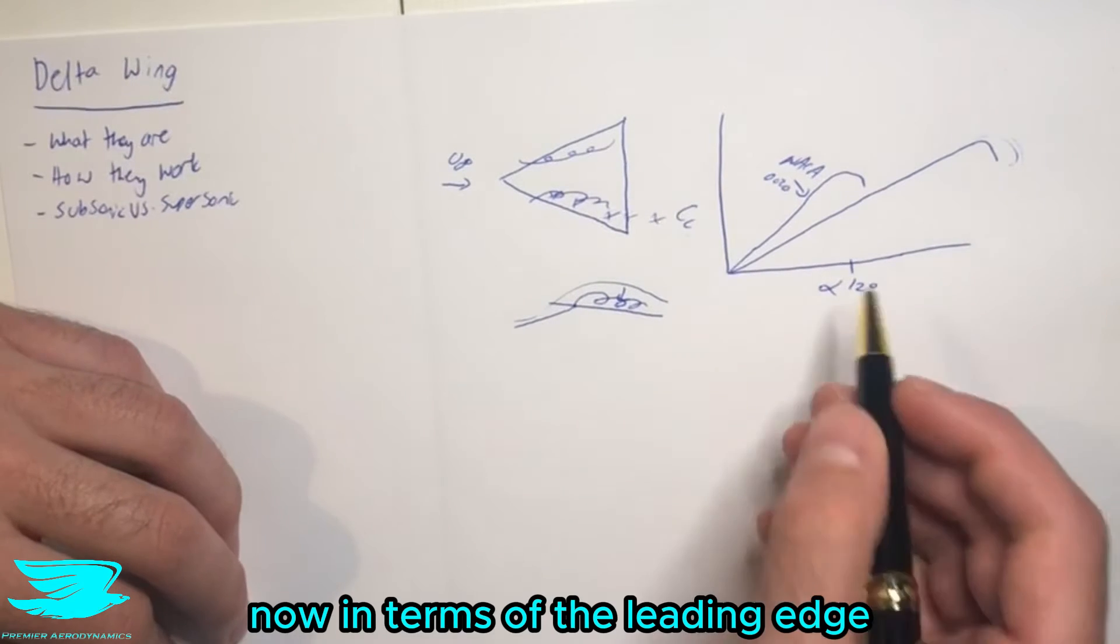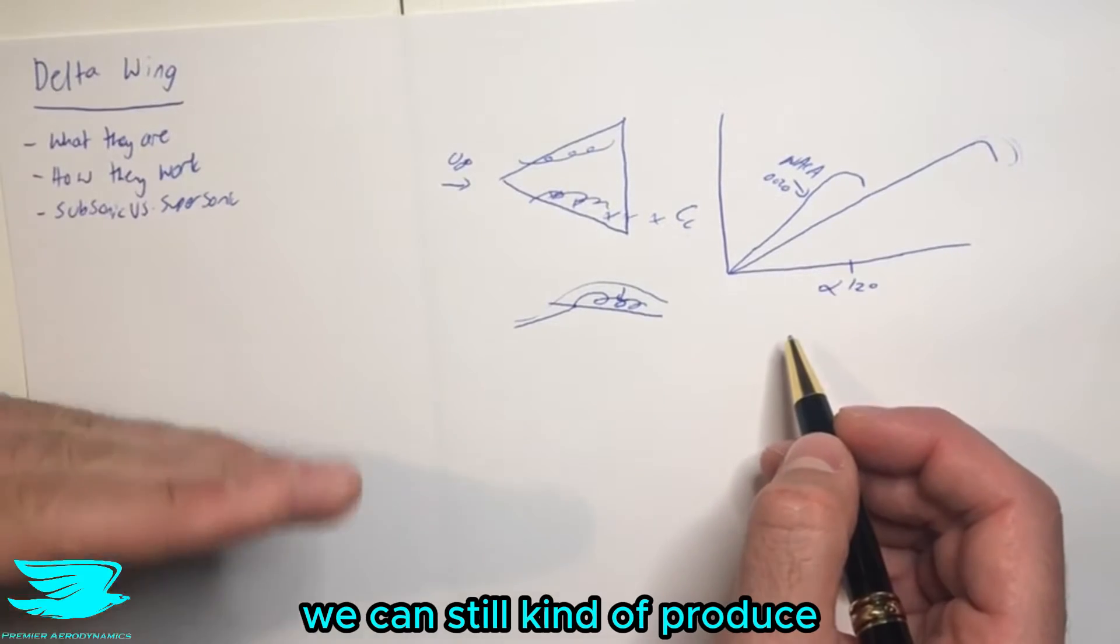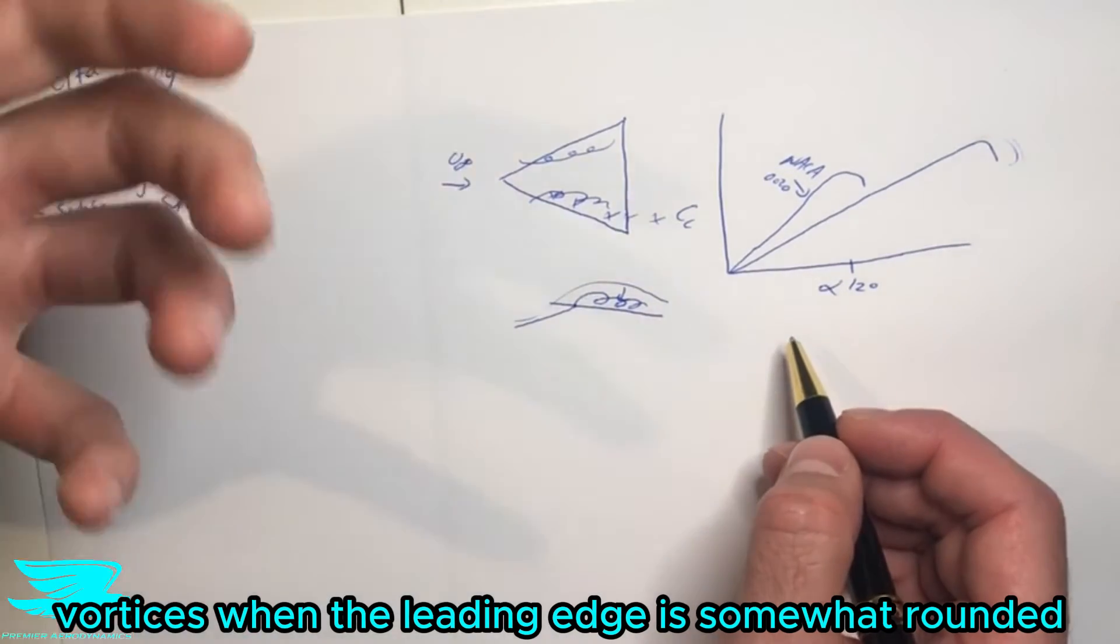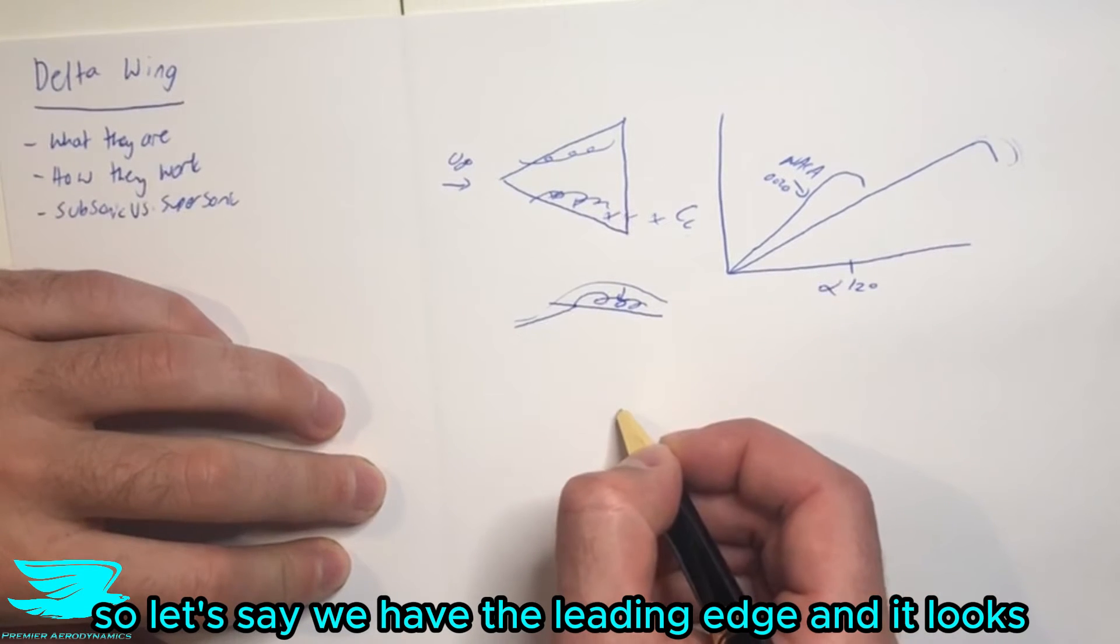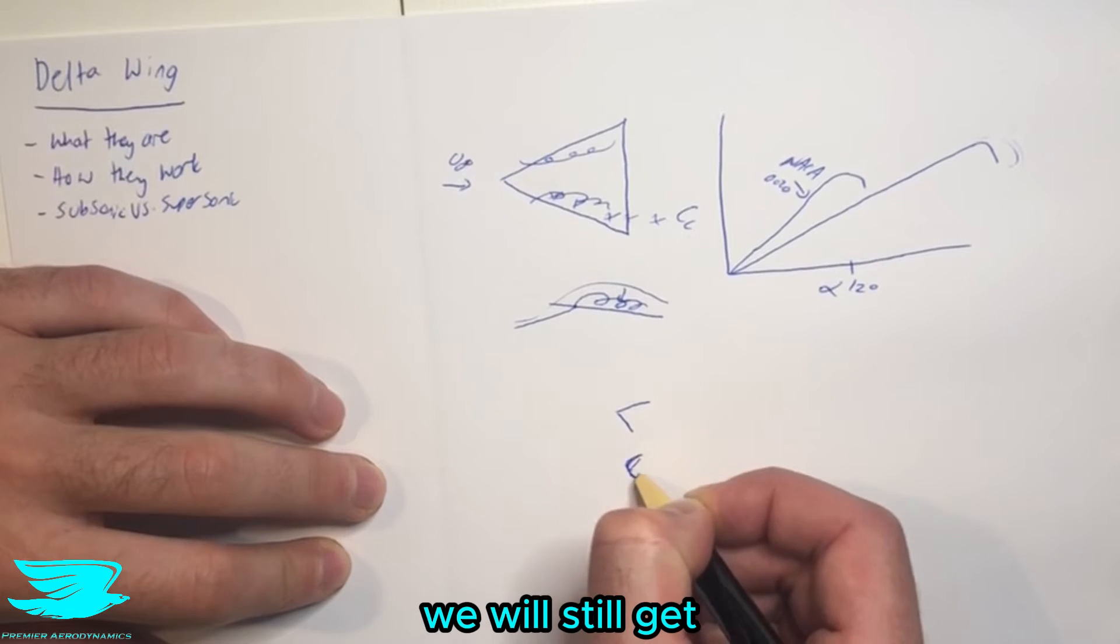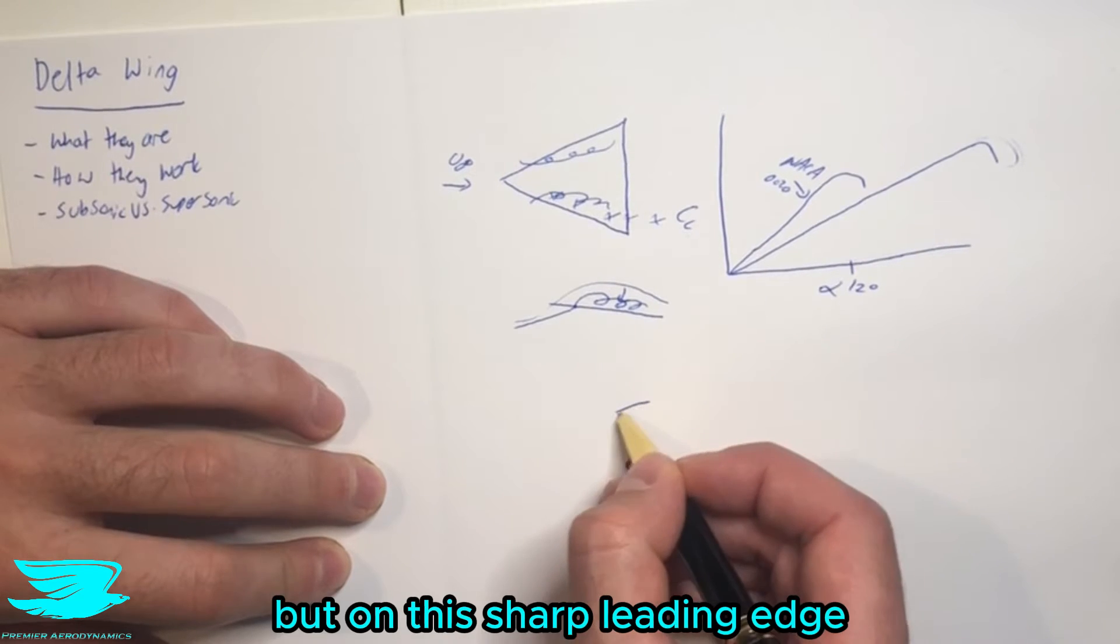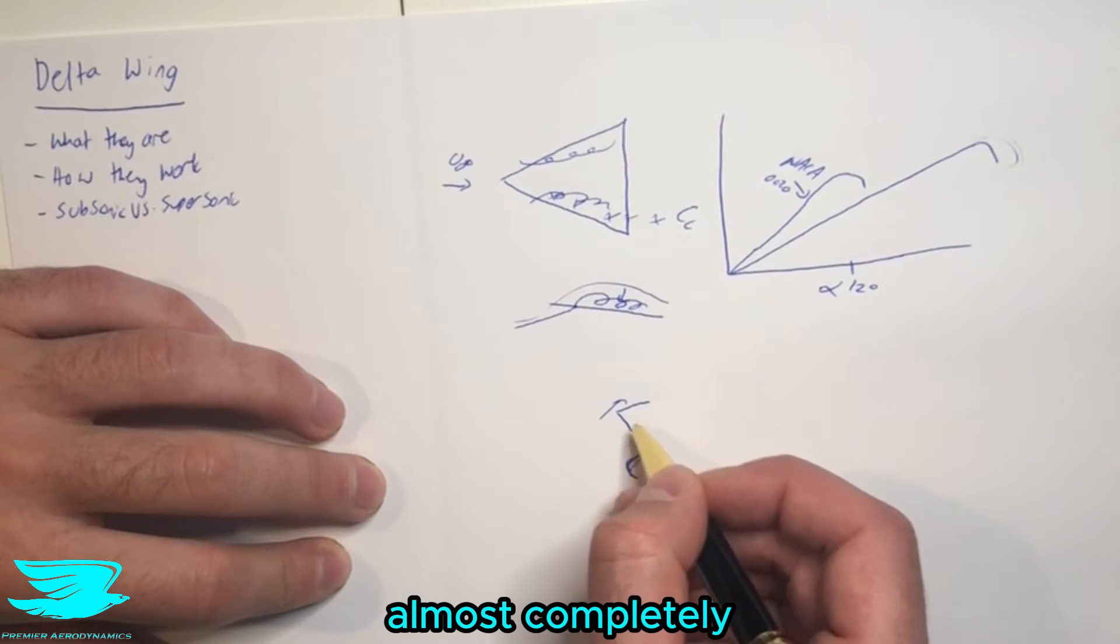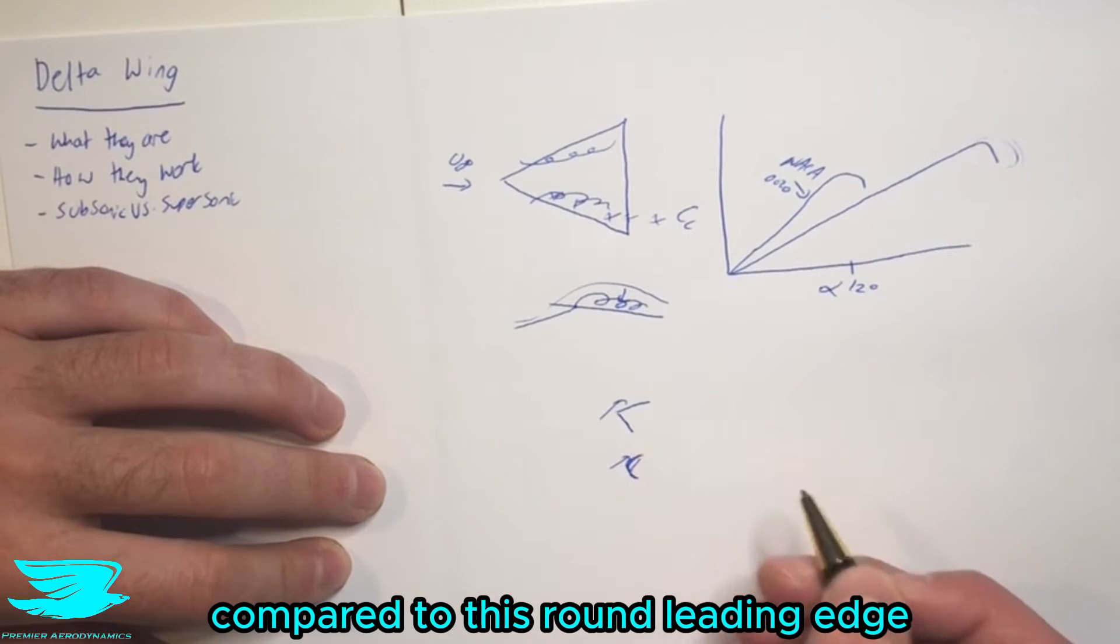Now in terms of the leading edge, we can still kind of produce vortices when the leading edge is somewhat rounded. So let's say we have the leading edge and it looks either like very sharp like this, or we round it, we will still get vortices forming. But on this sharp leading edge, the flow will separate much more and almost completely compared to this rounded edge.